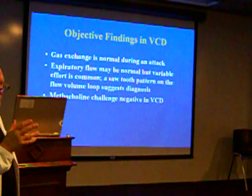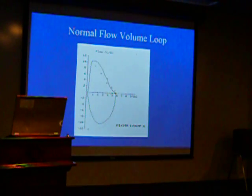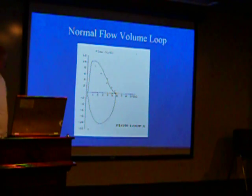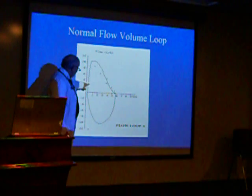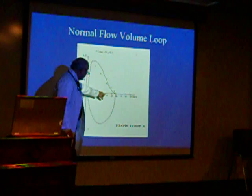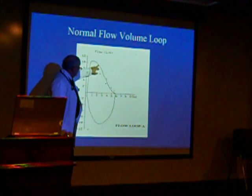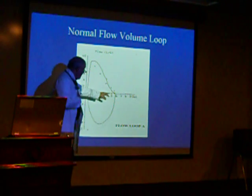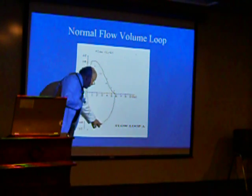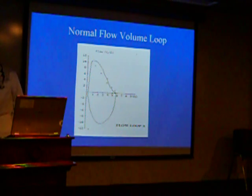In an outpatient where they're not having an attack, you bring them in and do the spirometry — that's the way you make the diagnosis. This is what a normal flow-volume loop looks like. The patient takes a deep breath all the way in, blows it out — this is the peak flow. Exhale, exhale, exhale. As the air gets less and less in the lungs you get down to residual volume. This is total lung capacity. You can't blow out anymore. Then you take a deep breath in. That's what the normal flow-volume loop looks like.